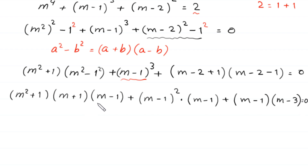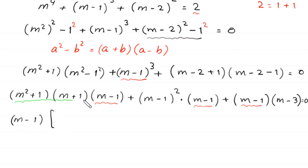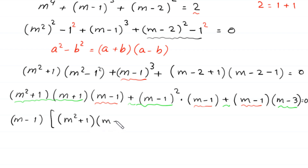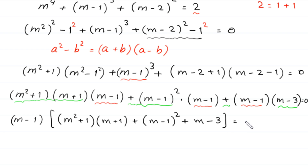As you can see, the expression m minus 1 is a common factor. So we factor out m minus 1. In the bracket what remains is m squared plus 1 times m plus 1, plus m minus 1 squared, plus m minus 3, equals 0. So we have m minus 1 times the quantity m squared plus 1 times m plus 1, plus m minus 1 whole squared, plus m minus 3, equal to 0.